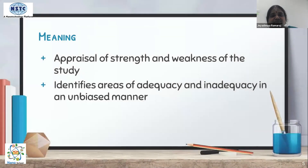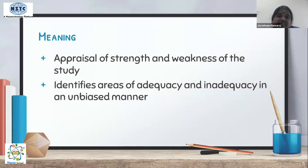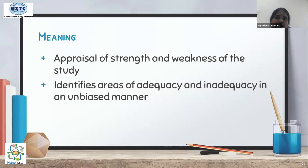The meaning of critical review is the appraisal of the strengths and weaknesses of a study. A critical review does not project only the negative aspects — it appreciates both the strengths and weaknesses of a published article, and identifies areas of adequacy and inadequacy in an unbiased manner. A reviewer should not impose their own views; the article must be viewed with both its strengths and weaknesses supported by evidence.